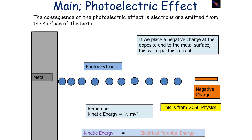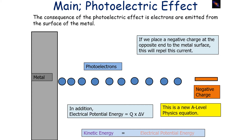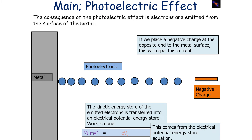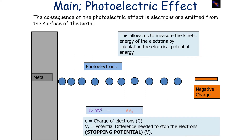From GCSE physics we know the equation to calculate kinetic energy: one half times mass times velocity squared. From A-level physics there is also an equation to calculate electrical potential energy, which is equal to the charge times the potential difference. As the charge of the particle here is the charge of the electron, we write it as e, which is 1.6 × 10⁻¹⁹ coulombs. Equating the two equations, we get: ½mv² = eV, where the big V is the potential difference needed to stop the electrons, which we call the stopping potential Vs.